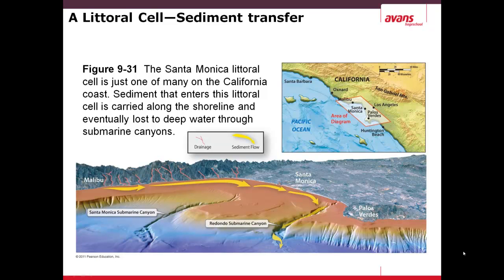Here is one example of a littoral cell — in this case it's Santa Monica, near Los Angeles. The sand enters the littoral cell from the north near Malibu, coming from longshore drift but also through the rivers going down through the islands north of Malibu, then along the coast of Los Angeles called Santa Monica. It then exits through a deep water canyon — a submarine canyon called the Redondo Submarine Canyon, which is quite deep.